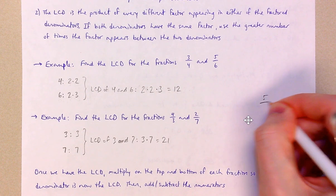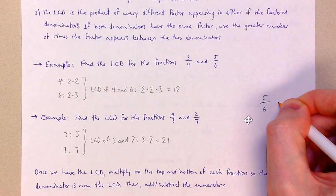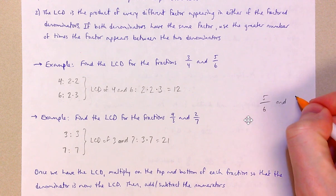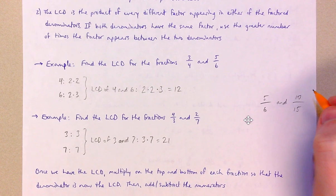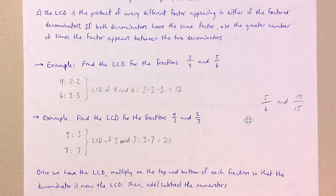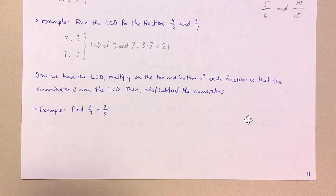Here are two more fractions — try to figure out what the least common multiple, or LCD, for these two fractions is going to be. I'm going to challenge you to figure this one out on your own. Once we have that LCD, I'm going to multiply on the top and bottom of each fraction so that the denominator becomes the LCD. We multiply each fraction by just the right number so the bottom equals our LCD, and then we just add the numerators.